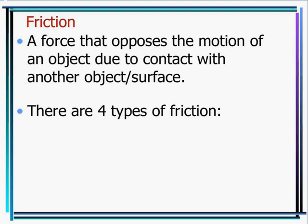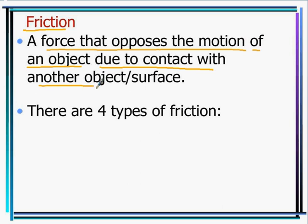Friction is a force that opposes the motion of an object due to contact with another object or surface. Friction is in the opposite direction of motion — it pushes against the motion. Friction involves surface contact, causing a resistance, like rubbing your hands together.